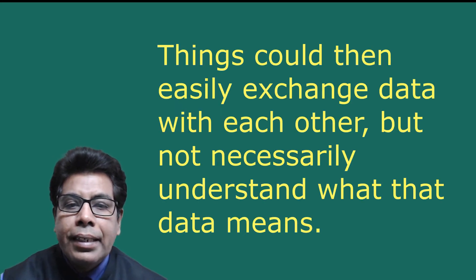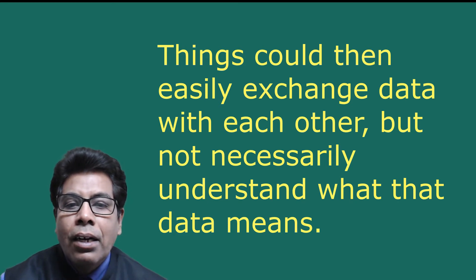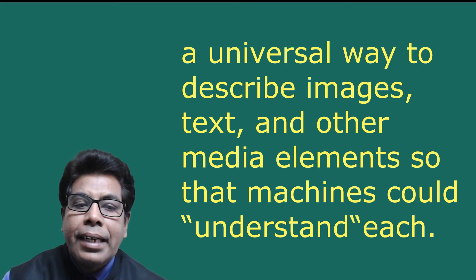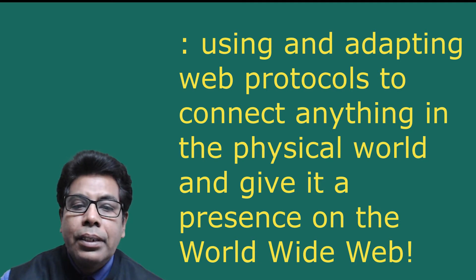Things would then easily exchange data with each other but not necessarily understand what that data means. This is what web protocols like HTTP brought to the internet — a universal way to describe images, text, and other media elements so that machines could understand each other. Web of things, or WoT, is simply the next stage in this evolution, using and adapting web protocols to connect anything in the physical world and give it a presence on the worldwide web.